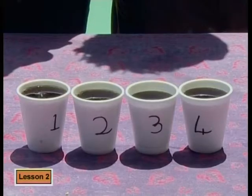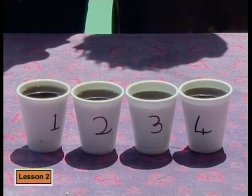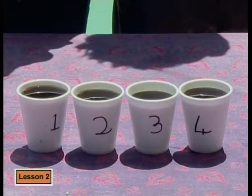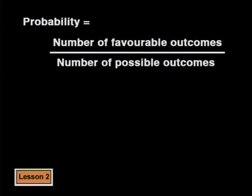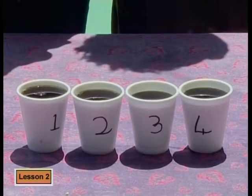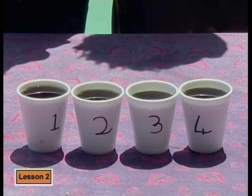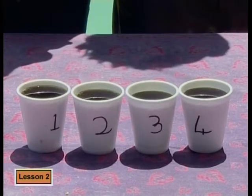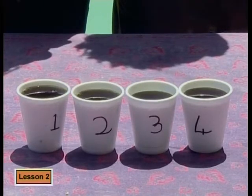Now let's go back to our cups of cola. There's no way the drinker can tell just by looking at the cups which one has which kind of cola. None of them has been given an unfair advantage over the other, so the possible outcomes are all equally likely. That means we can use the formula: favorable outcomes out of total number of possible outcomes.